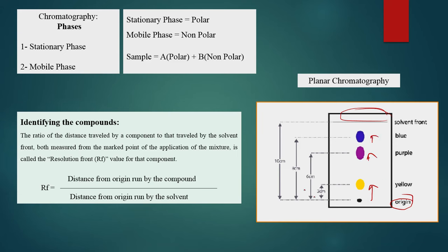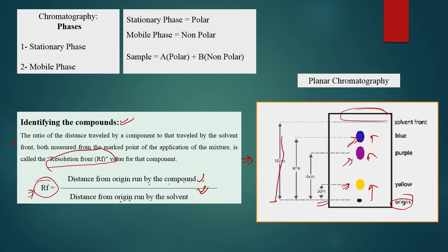Each component travels a different distance. The components are identified using the Rf value. The Rf value is the ratio of the distance traveled by the compound from the origin to the distance traveled by the solvent front. This Rf value is used to separate and identify different components in planar chromatography.